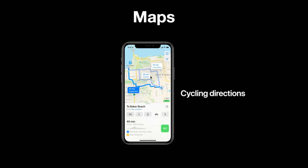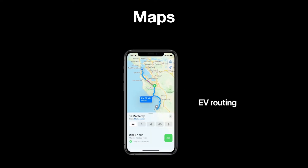With Maps, they've added a feature for guiding you to the best places. Completely new is the cycling direction option — alongside other navigation options, you'll now get cycling directions in the new Maps. There's also EV routing: if you have an electric car, you'll get EV routing with all available charging points shown for your car.